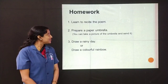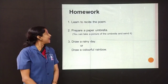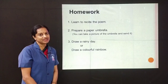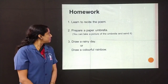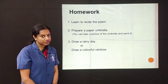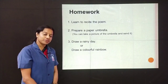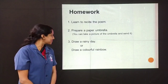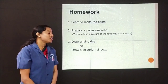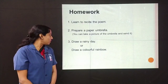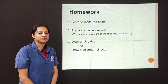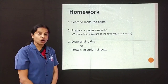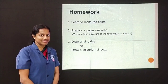Homework — you have to do some homework, children. Number one: you have to learn to recite the poem. Number two: you have to prepare a paper umbrella — you can take a picture of your umbrella and send it to me. Number three: draw a rainy day or draw a colorful and beautiful rainbow. You can do either or both — that is up to you.